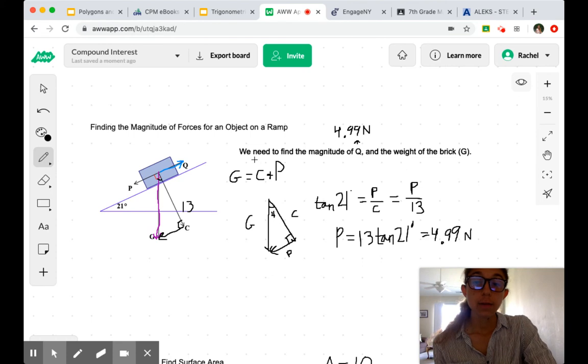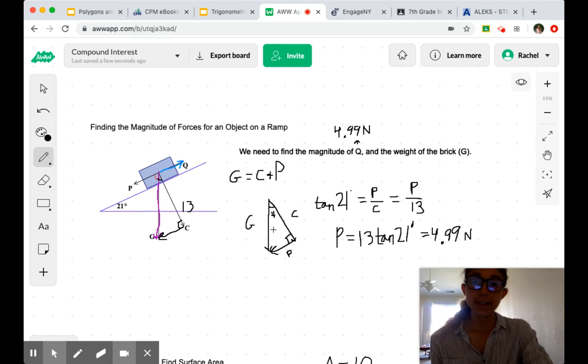From there, we want to find the magnitude of G, right? The weight of our brick. And we can use this same triangle. But now, instead of using tangent...